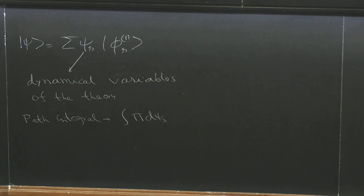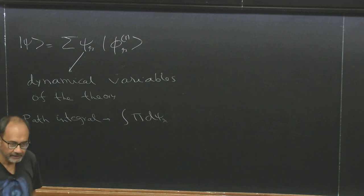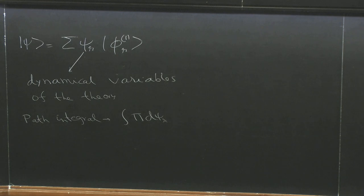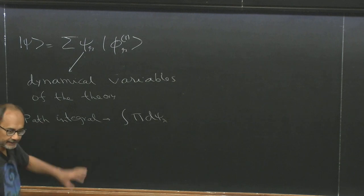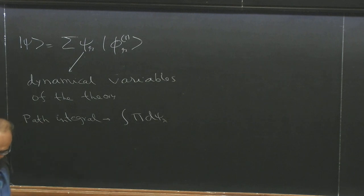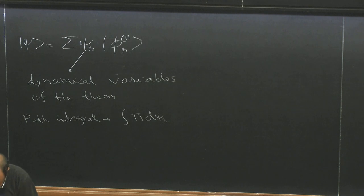This is a classical string field in the same sense that the usual Maxwell field A_mu is a classical field. But in the full quantum theory, of course, you will also have the ghosts. When I say classical string field, that only means that we have not included the ghosts yet — the ghosts that come from gauge fixing, which you have to do separately.